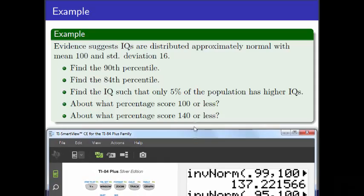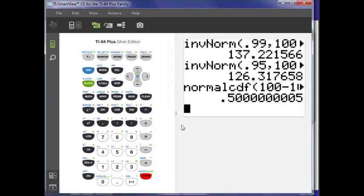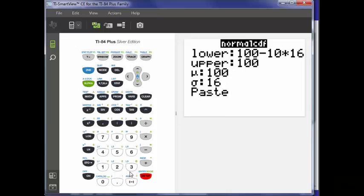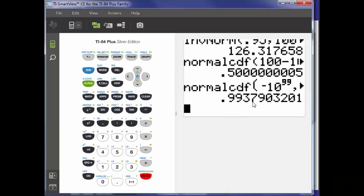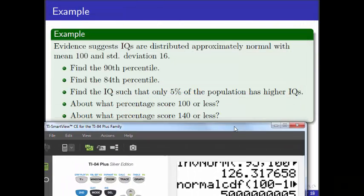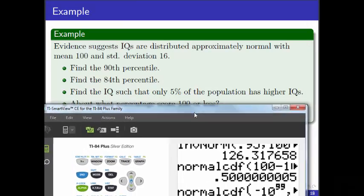About what percentage score at 140 or less? If you're being asked to find the percentage, then you need the normal CDF function. 140 or less. Normal CDF, something really far off to the left, we'll try negative 10 to the 99th this time. Upper is 140. My mean is still 100, my standard deviation is 16. 99.379%. So if your IQ is 140 or better, you're doing pretty darn good.